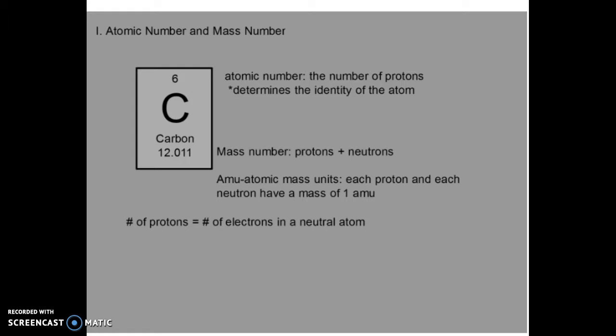Just a quick review. I know we talked about this in the last chapter, but what information do you get from the periodic table? For example, this right here, this is our atomic number. This atomic number is always the number of protons. When we look at the number down here, this is our mass number. This is the number of protons added to the number of neutrons.